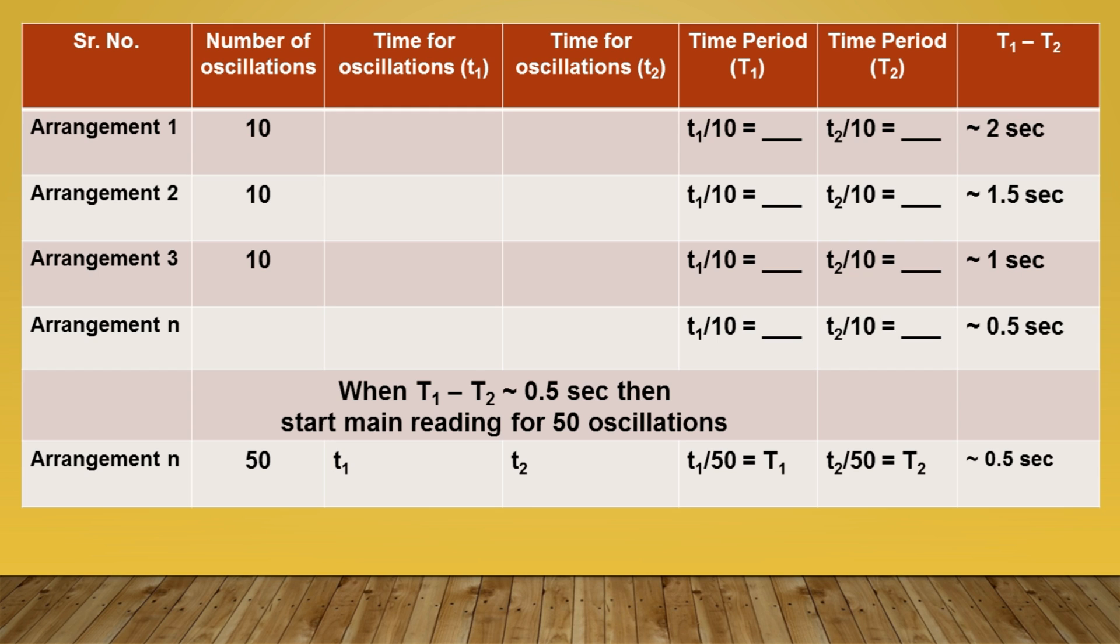Just take an example. In case of arrangement 1, we started this experiment with 10 oscillations and noted its time period and then calculated the time for one oscillation in both cases and then the difference of their time is let us consider was 2 seconds. Then we arranged it further and got this difference to be around 1.5 seconds. Similarly, for the next arrangement, we got it around 1 second.